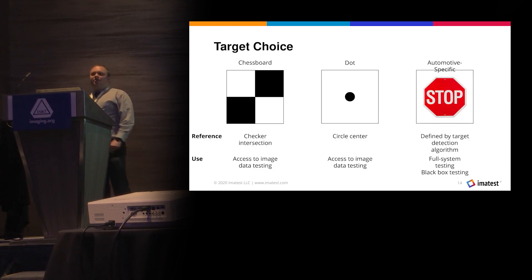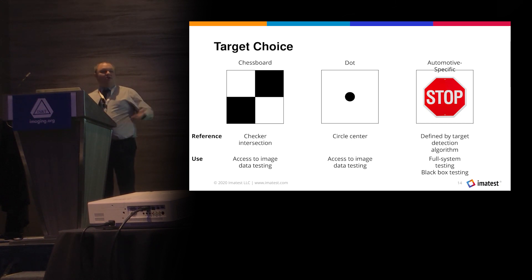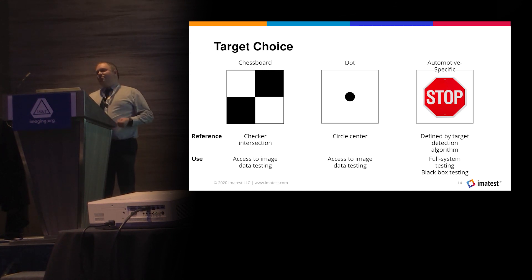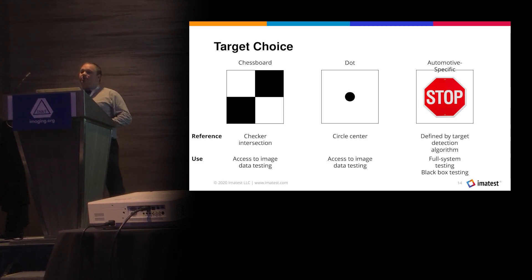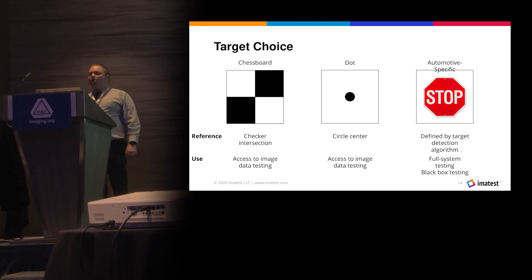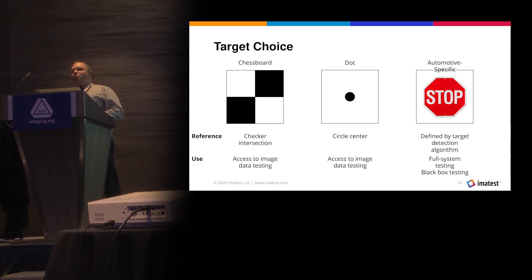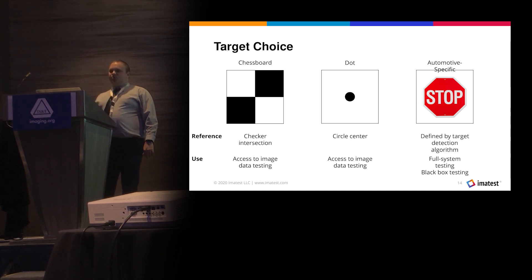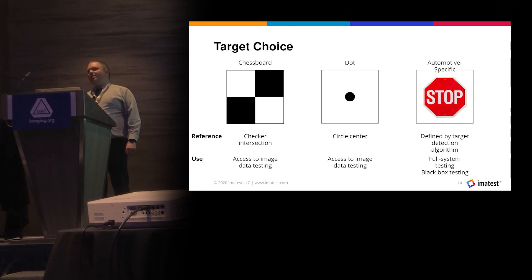I have been using the word 'targets' somewhat loosely. Some examples of a target: you could have a chessboard, in which case you have your checker intersection. You could have a dot. Or, if you are trying to test your entire system including your camera system's detection, you could use an automotive target such as a stop sign, a car, or a pedestrian. This is one of the ways I'm trying to build in flexibility for testing multiple levels of the image processing chain, while still writing something down that we can hopefully standardize within the standard.